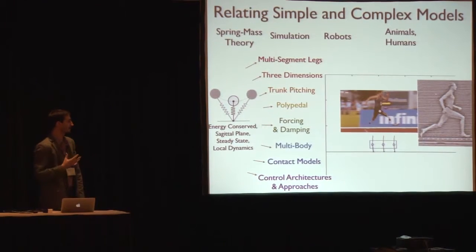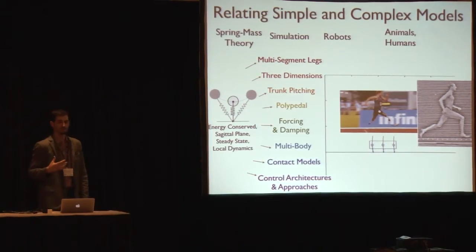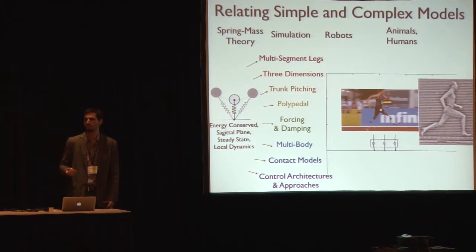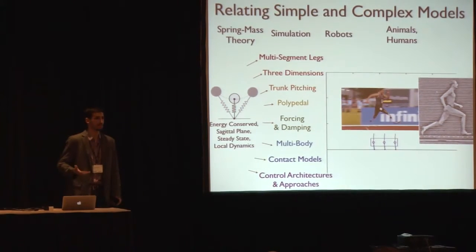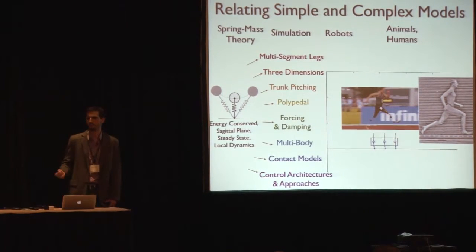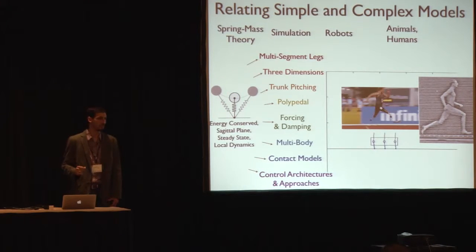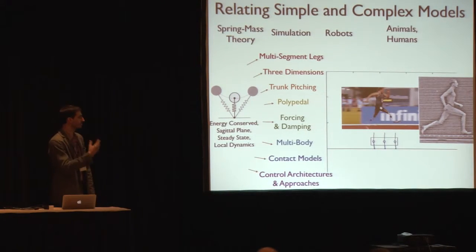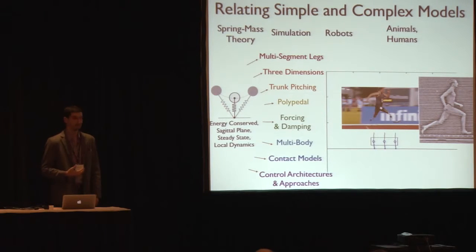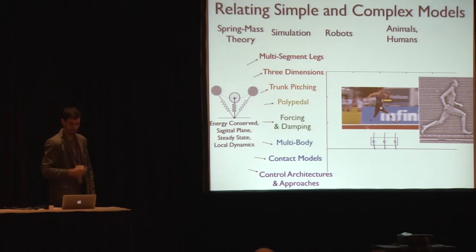There are obviously many different ways we could go from a known model or result — something like SLIP, because it is something that's established and there are a number of solutions and experiments involving it. But we can extend and improve the hypotheses in various directions, as represented here by this colored list of different directions.